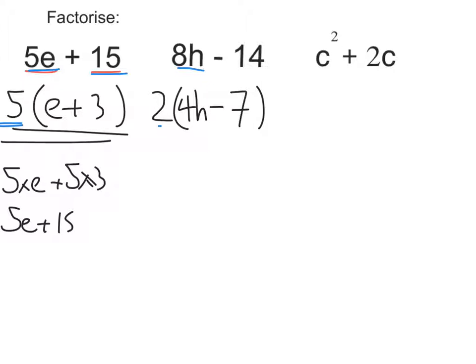Now for the last one, we've got c squared plus 2c. Now the largest number that divides c squared and 2c is 1. So that's not going to be the number I write outside. But c squared means c times c. So I've got c's in both of my two terms. So I can divide them by c. Now, let's do c squared divided by c. Well, that's just going to be c. And then 2c divided by c would mean the c's cancel. I'm just left with the 2.